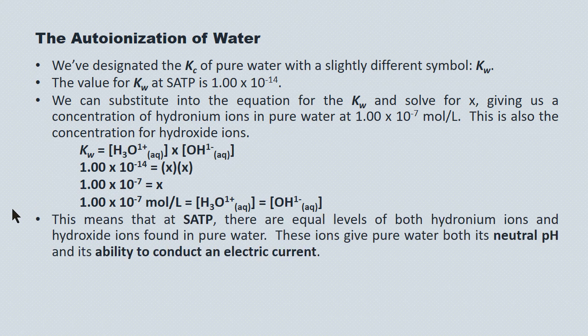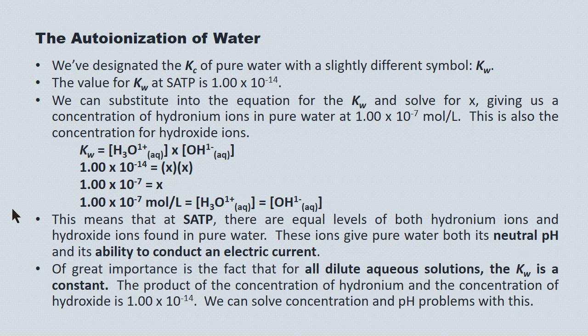At SATP, since they're equal, this gives rise to both a neutral pH and water's ability to conduct electricity, however poorly. Of greater importance is the fact that this expression holds true for all dilute aqueous solutions. Kw is a constant — it equals 1.00 times 10 to the minus 14 for all of these solutions. So we can solve concentration and pH problems with this equation.